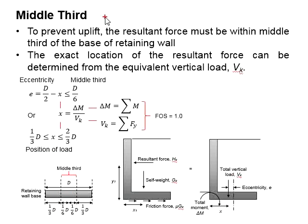Alternatively, it can be determined based on the eccentricity. The eccentricity referring to the offset distance between the vertical load and the central axis of the base of the retaining wall, as expressed in this equation.